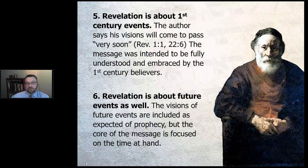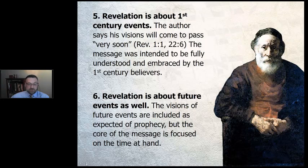Points number five and six: Revelation is about first century events — that's important to keep in mind. The author says that his visions will come to pass 'very soon.' If you read Revelation 1:1 and 22:6, that is exactly what you will encounter. The message was intended to be fully understood and embraced by first century believers — there should be no mystery for them. If they don't get it, then neither should we, because according to John it was supposed to happen in their day very soon. Point number six is that Revelation is also about future events, and John does not hide that. He tells you that these visions are of future events, and just as prophecy included future predictions, so does Revelation. But the core of the message is focused on the time at hand — Revelation is largely about first century events, and the future is certainly part of the message, but not the biggest part.